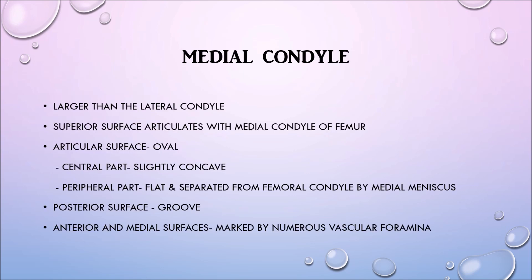Now let's look at the medial condyle in detail — we have five points. Firstly, the medial condyle is larger than the lateral condyle. Its superior surface articulates with the medial condyle of the femur. Its articular surface is oval and the central part of the articular surface is slightly concave.